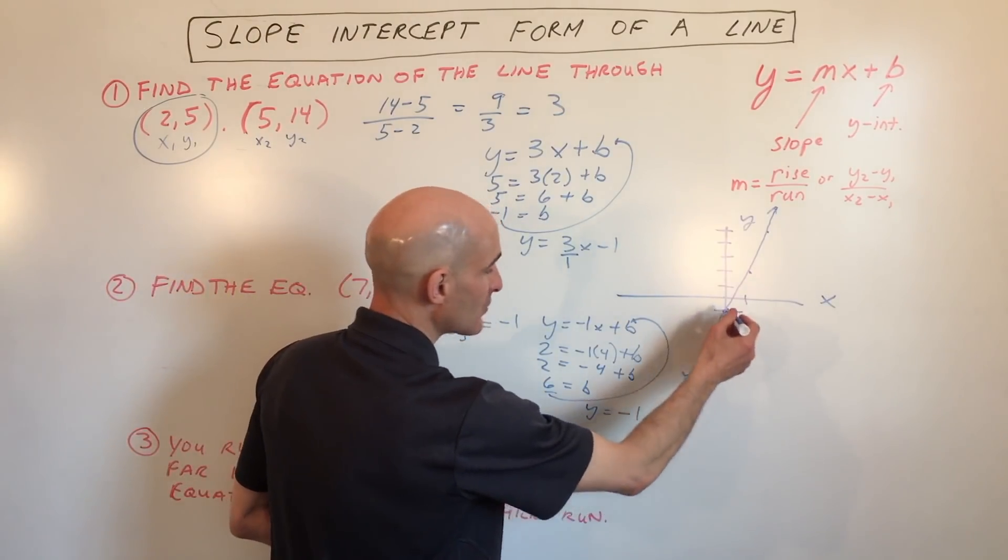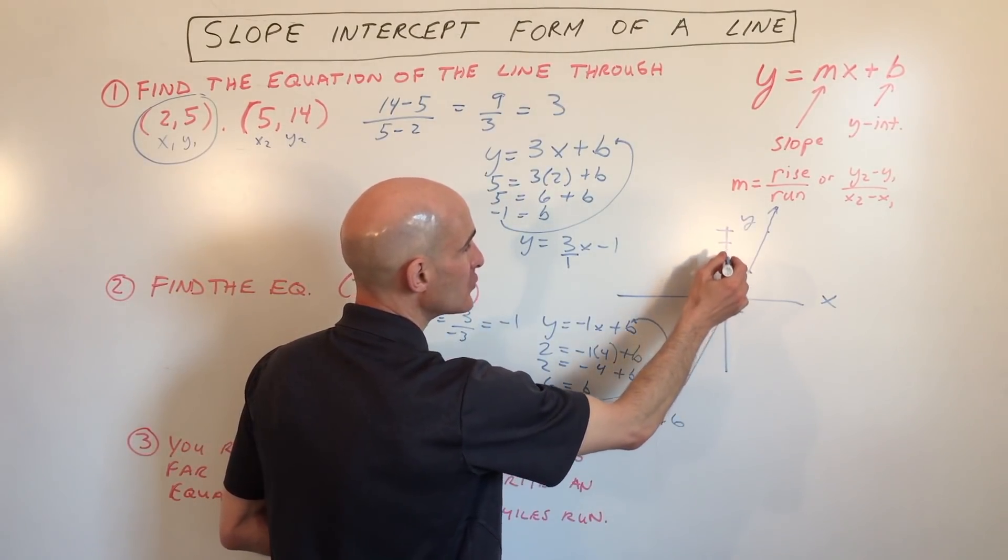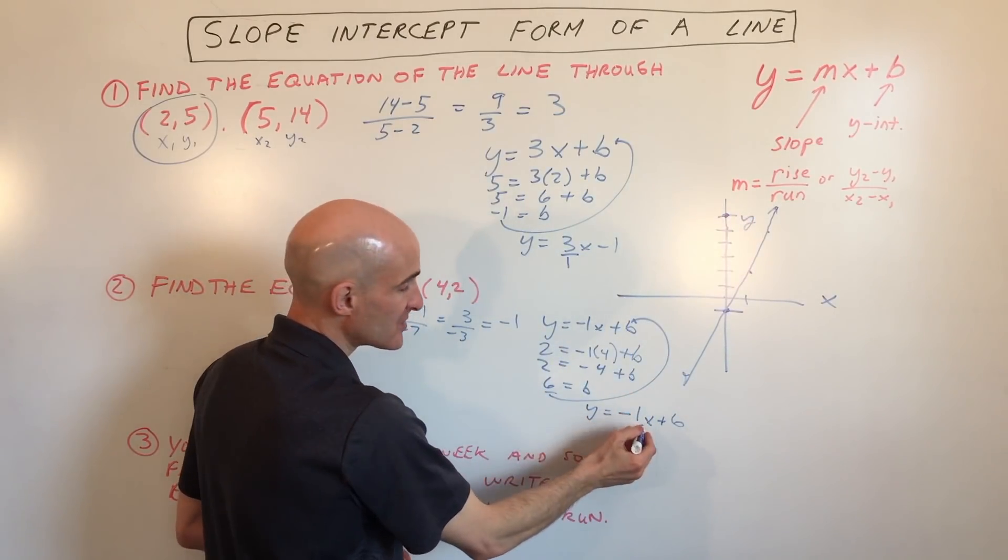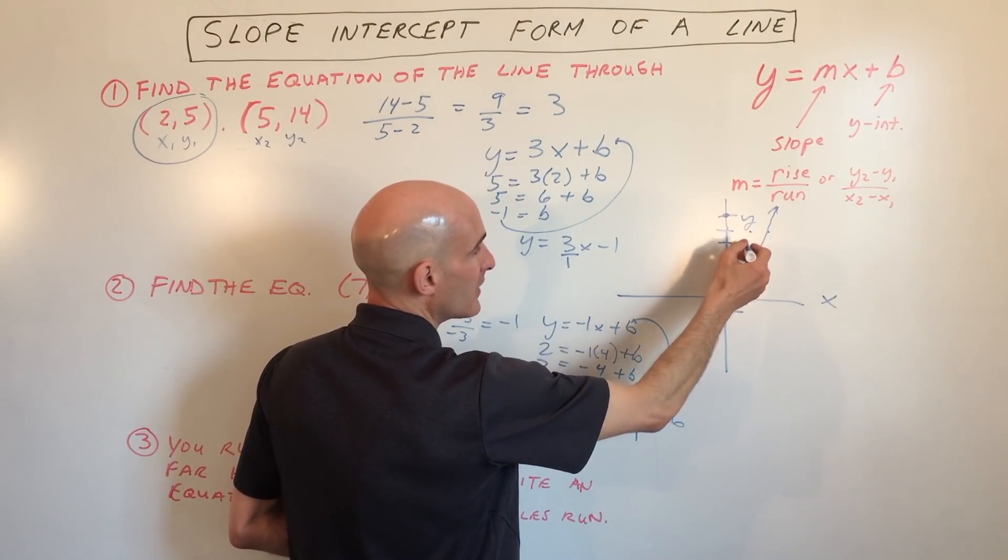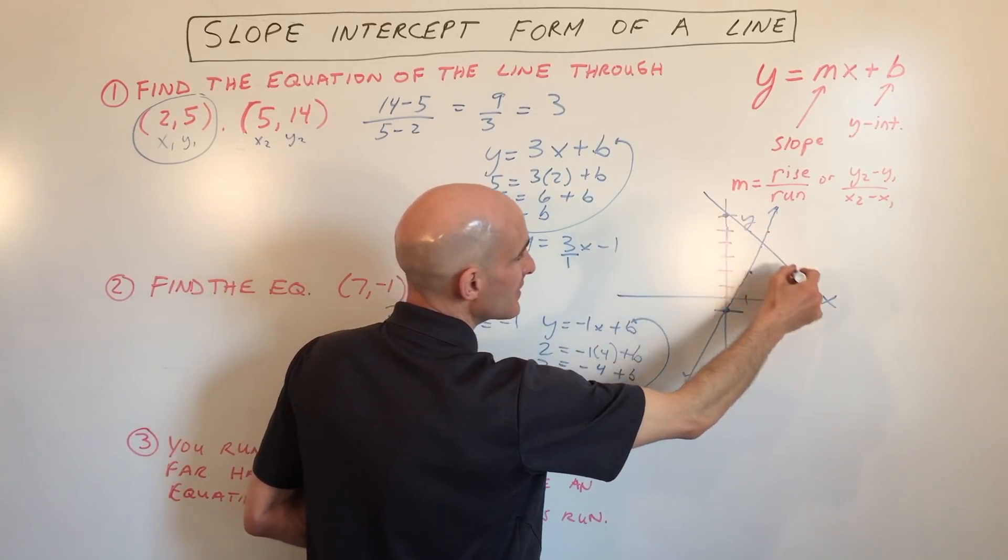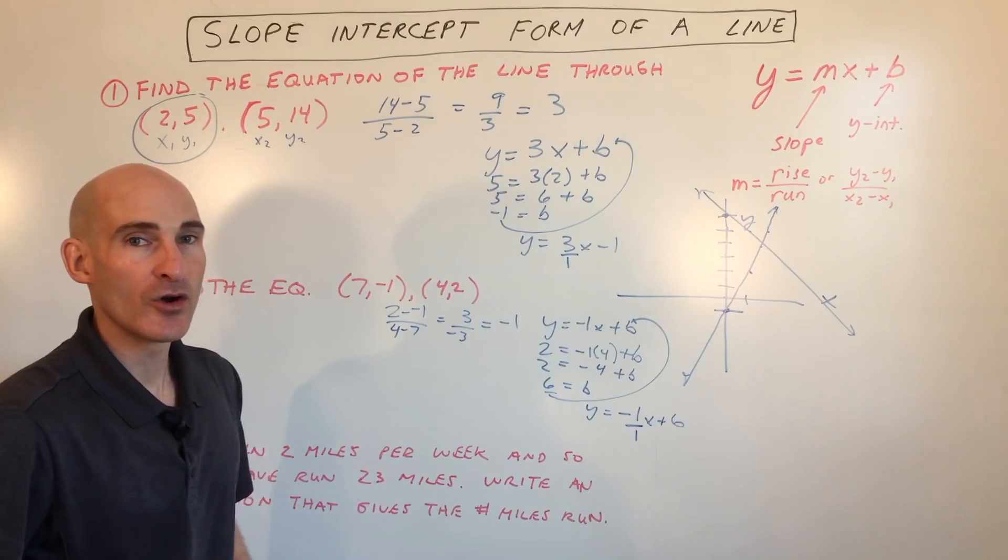We're going to graph it just like we did the first one. The y-intercept is 6, so we're going to go up 1, 2, 3, 4, 5, 6, right here. And the slope is negative 1, which is like negative 1 over 1. So we're going to go down 1, right 1, down 1, right 1, and so on. And you can see there's the graph of that line.